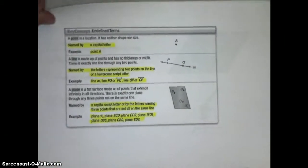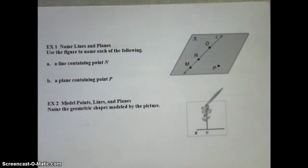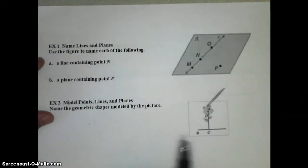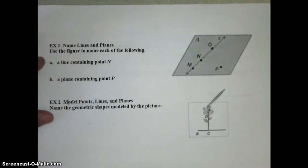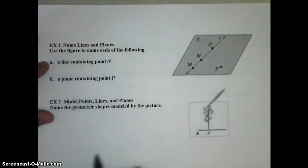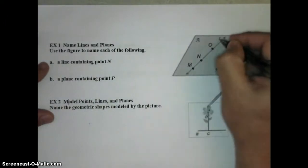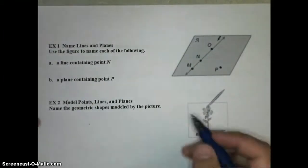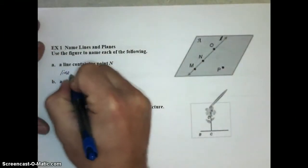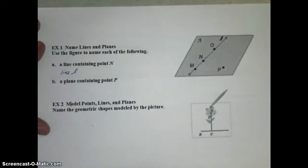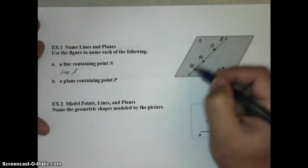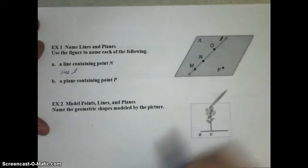Let's take a look at our examples. In example one, we're going to name lines and planes using this figure. I want you to try and name a line containing point N in this figure. Let's name a line containing point N, see if it's the same one I have. N is on this point here. That is called line L, that's a script or cursive L there. So a line containing point N is line L. You could have called it line N-O, line M-N, line M-O, line O-M. Anything that refers to this line will have point N on that line.